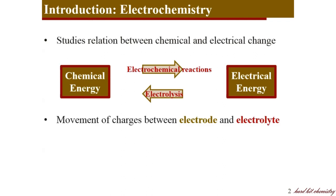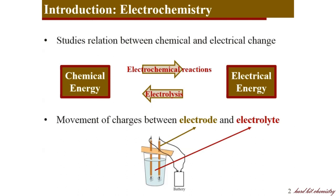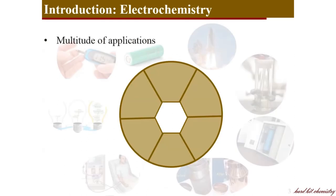Any electrochemical reaction at its heart consists of an electrode and an electrolyte. As shown here in the most simplified picture, electricity is conducted from one electrode to the other through the electrolyte by the movement of particles called ions. We will see the detailed procedure very soon, but before that we will see some applications of electrochemistry.